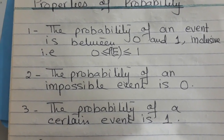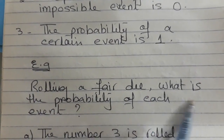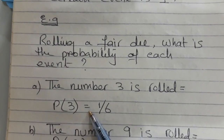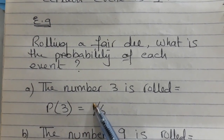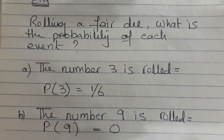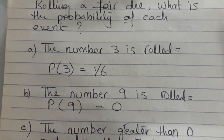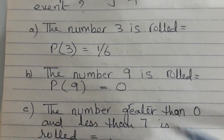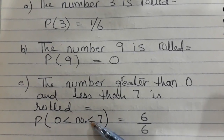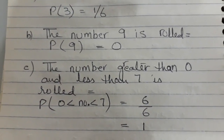Let's see an example: rolling a fair die — what is the probability of each event? The number 3 is rolled: probability = 1/6, because out of six faces, one face has the number 3. The number 9 is rolled: probability = 0, because no face on a die has the number 9. A number greater than 0 and less than 7 is rolled: probability = 6/6 = 1, since every face satisfies this condition.